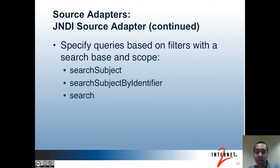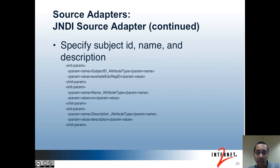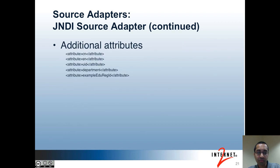Next, you have to specify the queries based on LDAP filters that include search bases and a scope. You'll have separate queries for searches based on ID, identifier, and the more generic, typically human-driven search. The example-sources.xml files have examples of this. Once again, you have to specify which attributes in LDAP are the subject ID, the name, and the description. Finally, you can specify additional attributes to be returned in searches. These attributes would get included in the LDAP search and associated with the subject object as attributes of the subject.